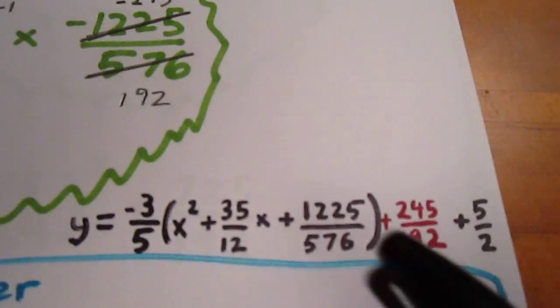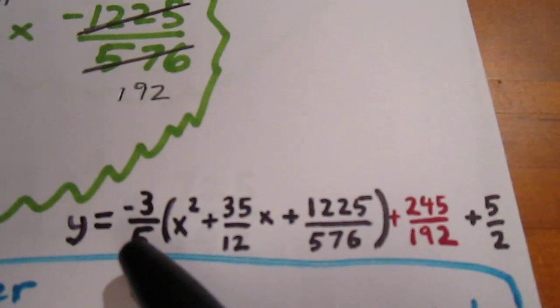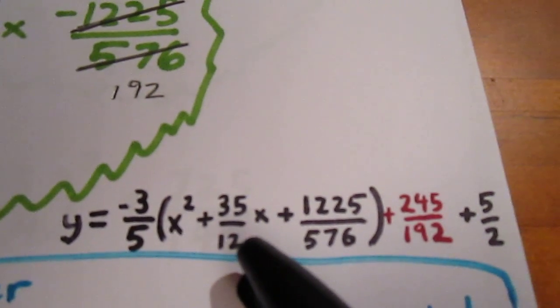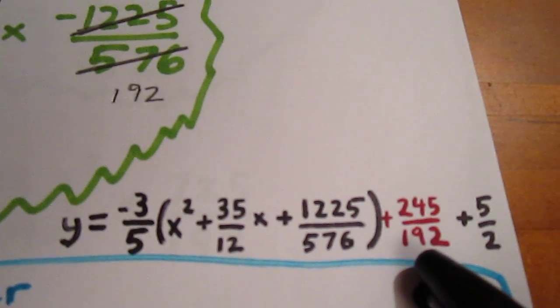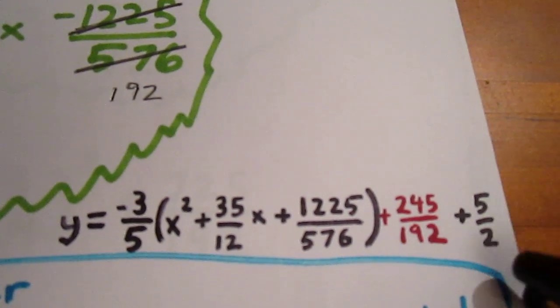And so, we can kick that term out and we have negative 3 fifths x squared plus 35 over 12x plus 1225 over 576 plus 245 over 192 plus 5 halves.